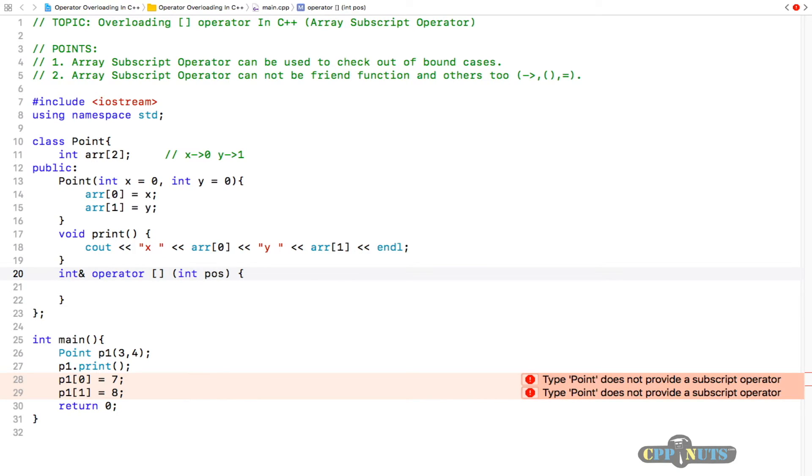The syntax would be like this: int& operator[] with round brackets, and you will get one integer position inside this. This is the syntax of your subscript operator overloading. You will return an integer reference.